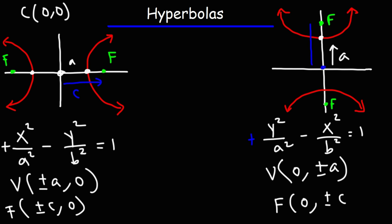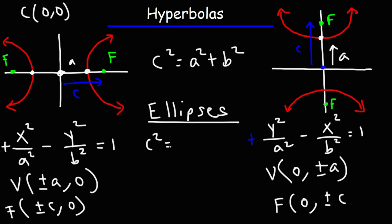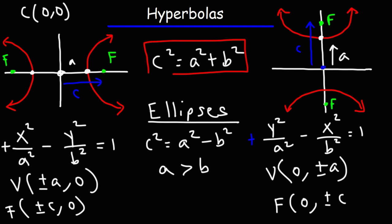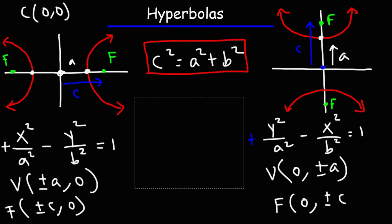The equation that relates a, b, and c for the hyperbola is c squared equals a squared plus b squared. In contrast, for ellipses the equation is c squared equals a squared minus b squared. For an ellipse, a is always larger than b. But for hyperbolas, a may be larger than b and sometimes b may be larger than a — the relative sizes are not important for hyperbolas. Make sure you're aware of that key difference.